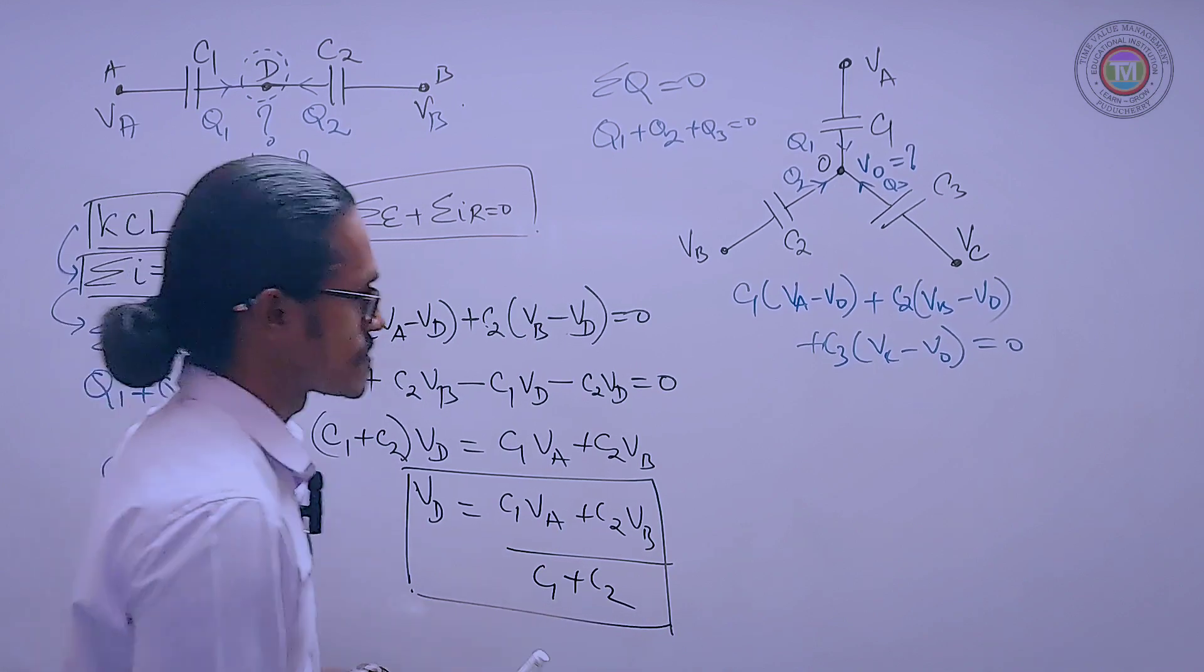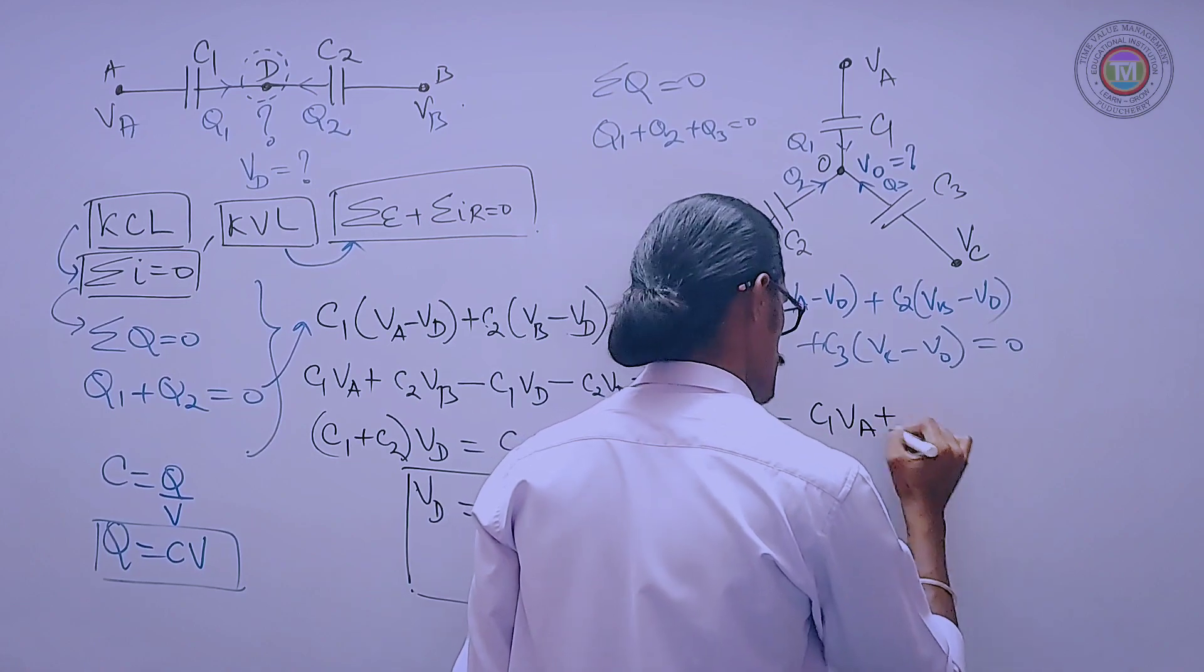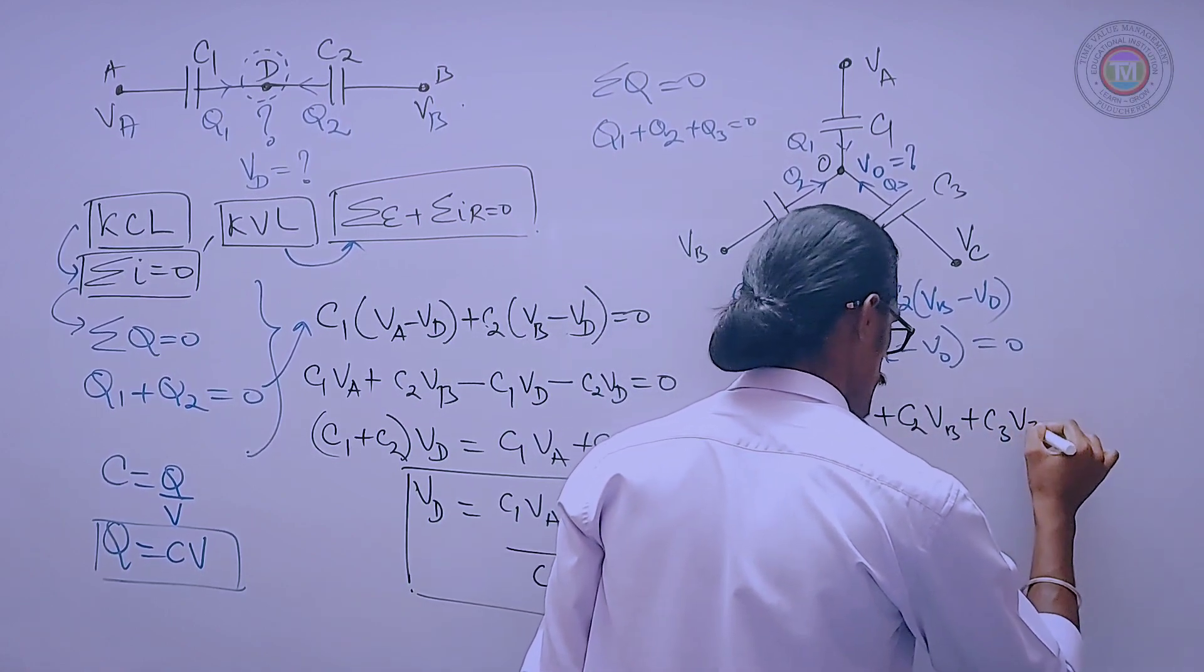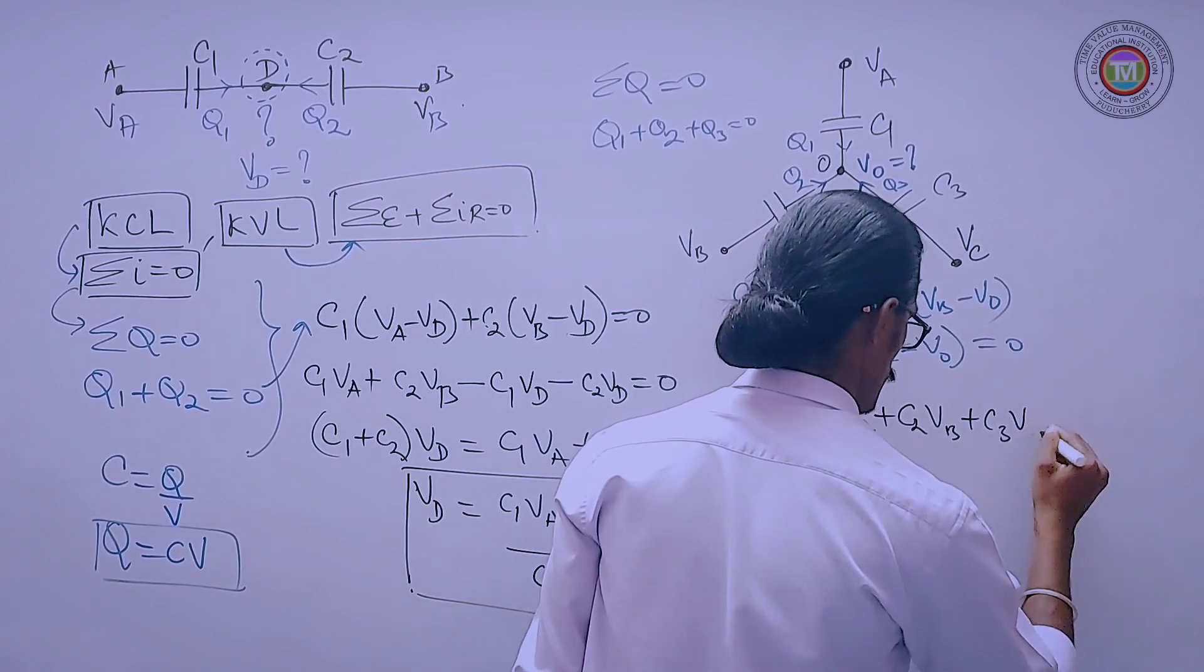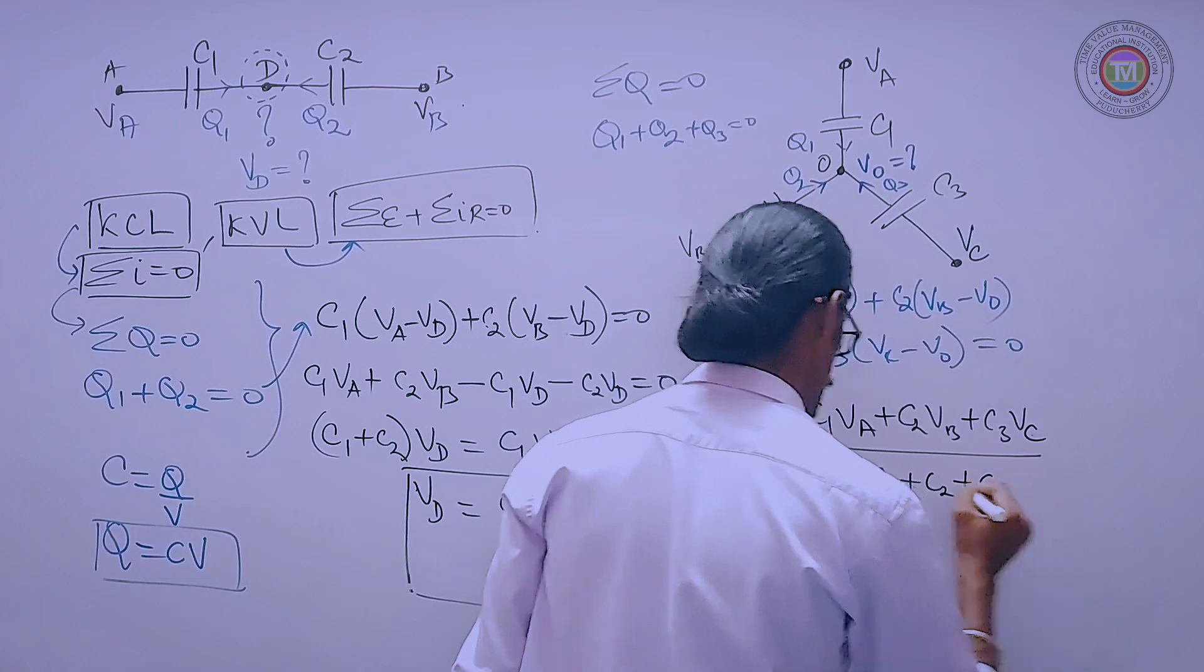So what is VO? It is simply C1 VA plus C2 VB plus C3 VC, whole divided by C1 plus C2 plus C3.